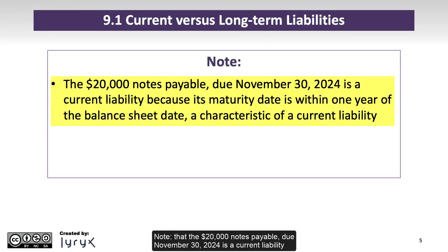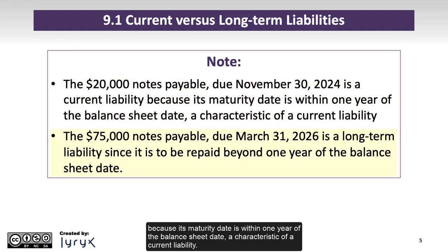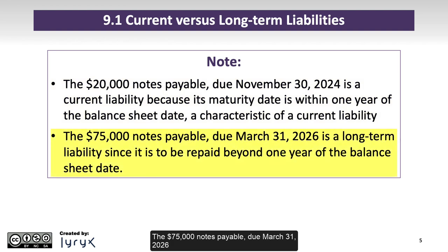Note that the $20,000 notes payable due November 30, 2024 is a current liability because its maturity date is within one year of the balance sheet date, a characteristic of a current liability. The $75,000 notes payable due March 31, 2026 is a long-term liability since it is to be repaid beyond one year of the balance sheet date.